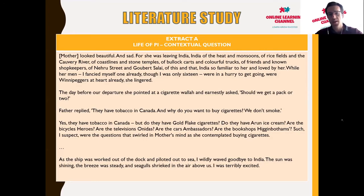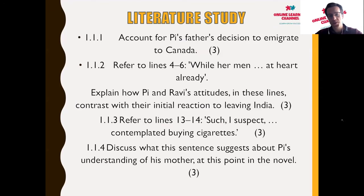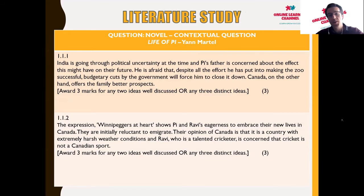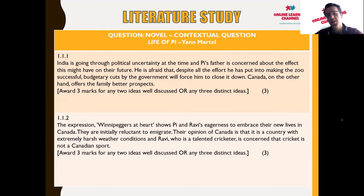The extract clearly refers to the family making the move to Canada and leaving their life behind in India. Question one asks us to account for Pi's father's decision to immigrate to Canada. India is going through political uncertainty at the time and Pi's father is concerned about its effect on their future. He fears that budgetary cuts from the government will force him to close the zoo. Canada, considered a first-world country, offers the family better prospects going forward.